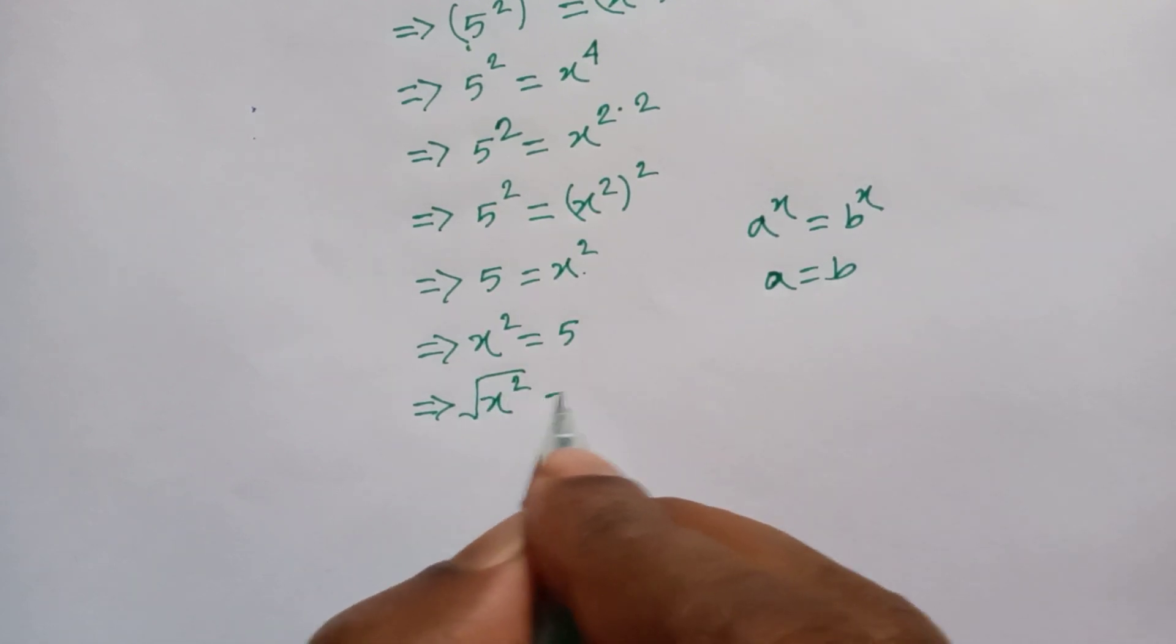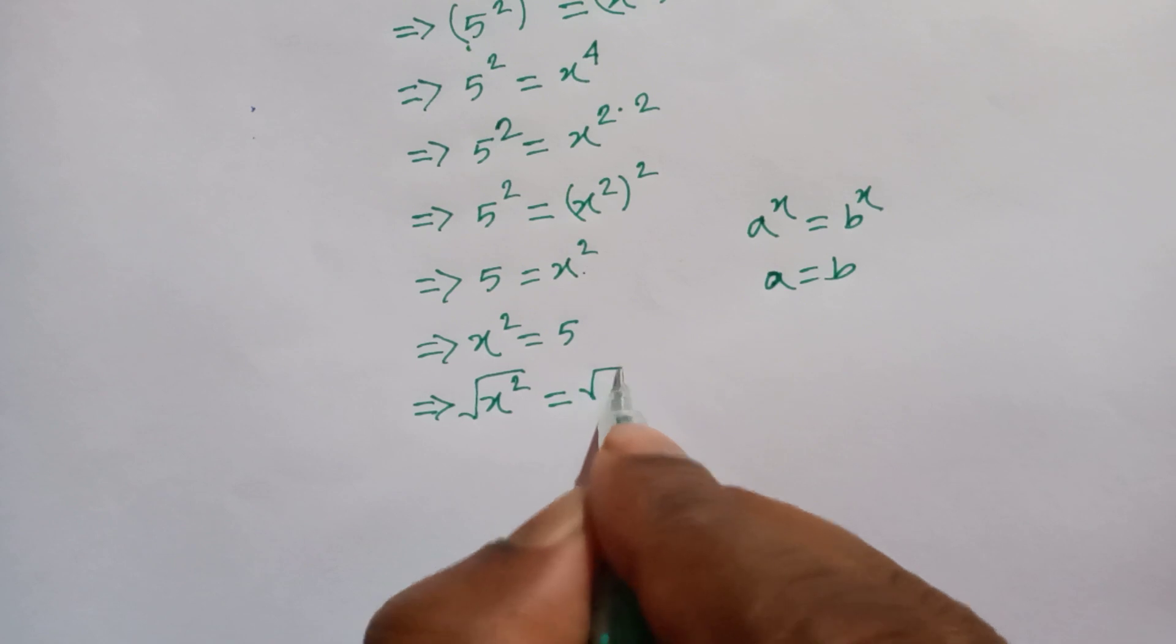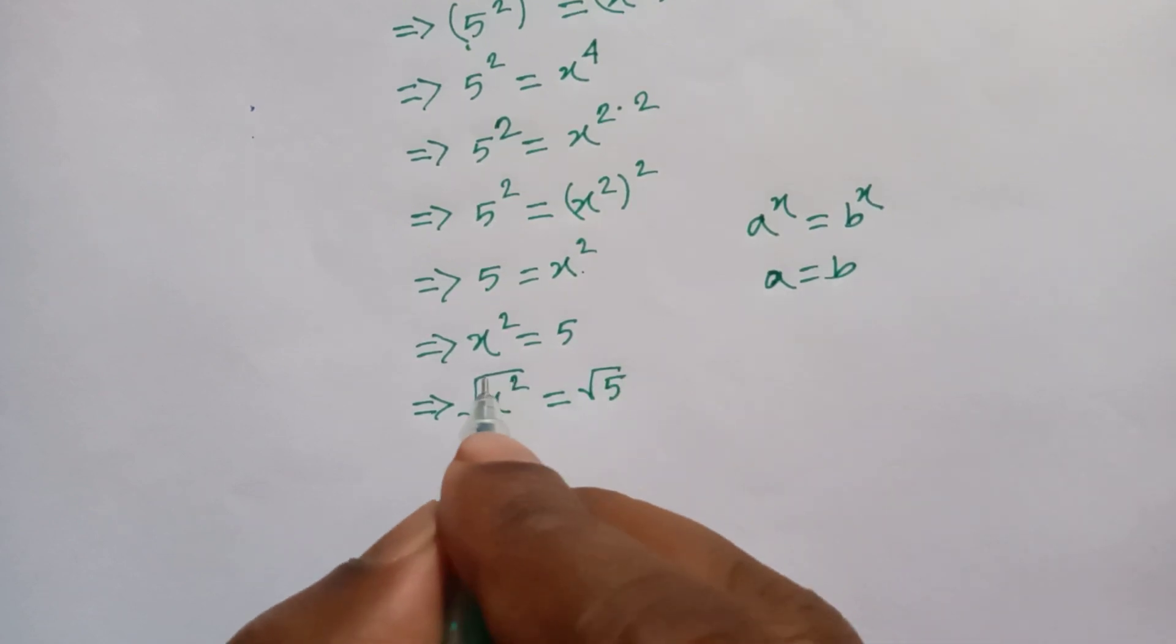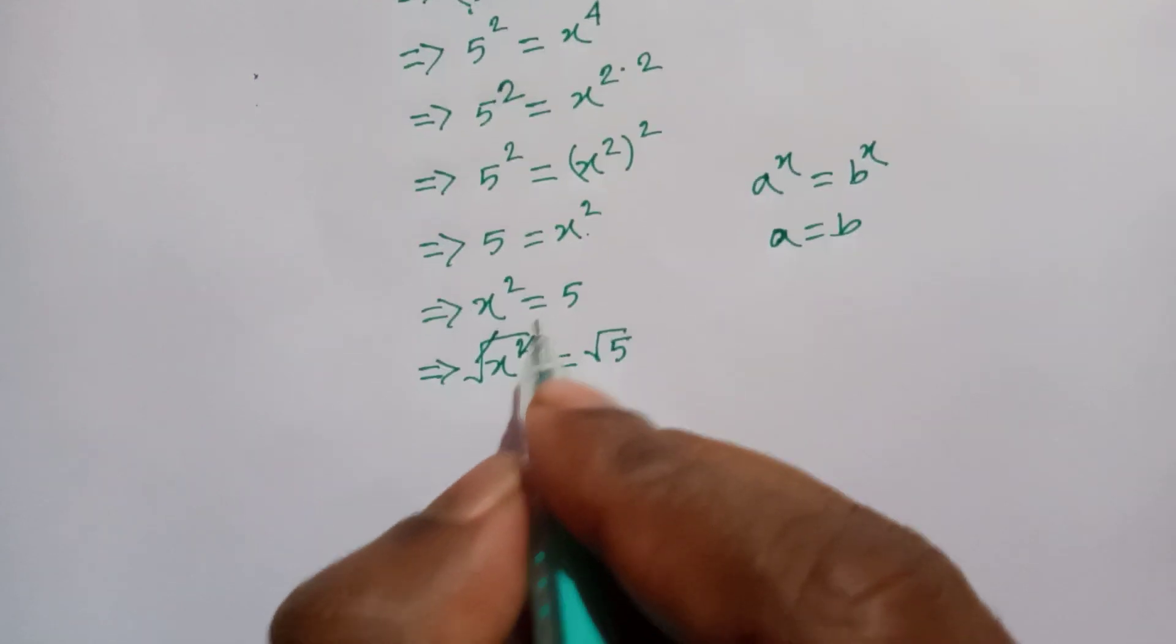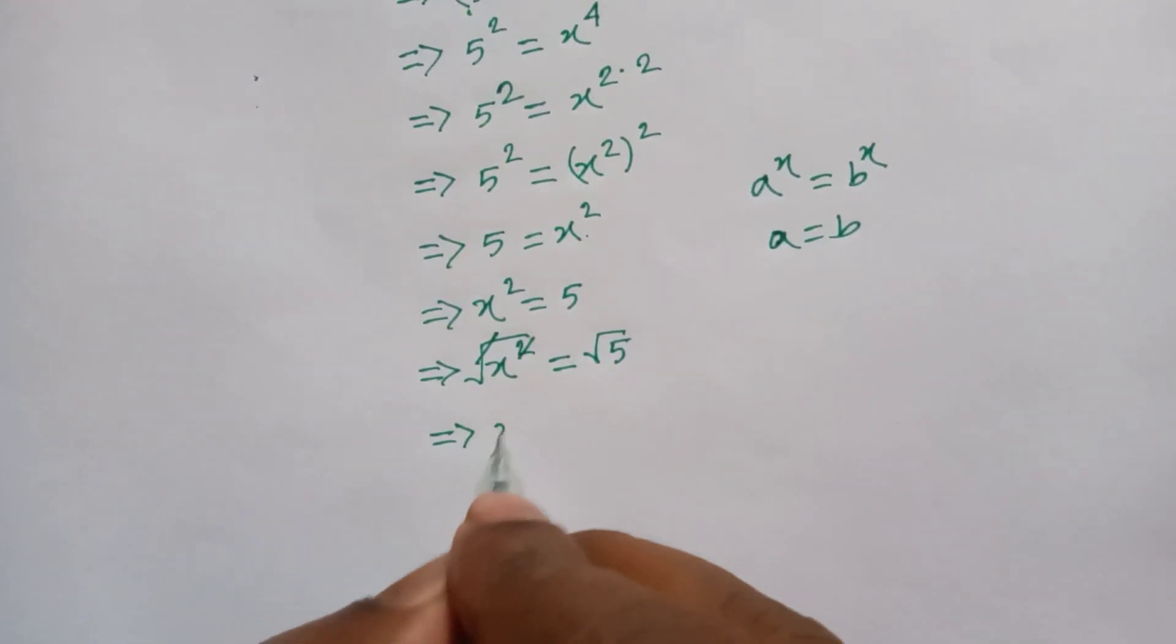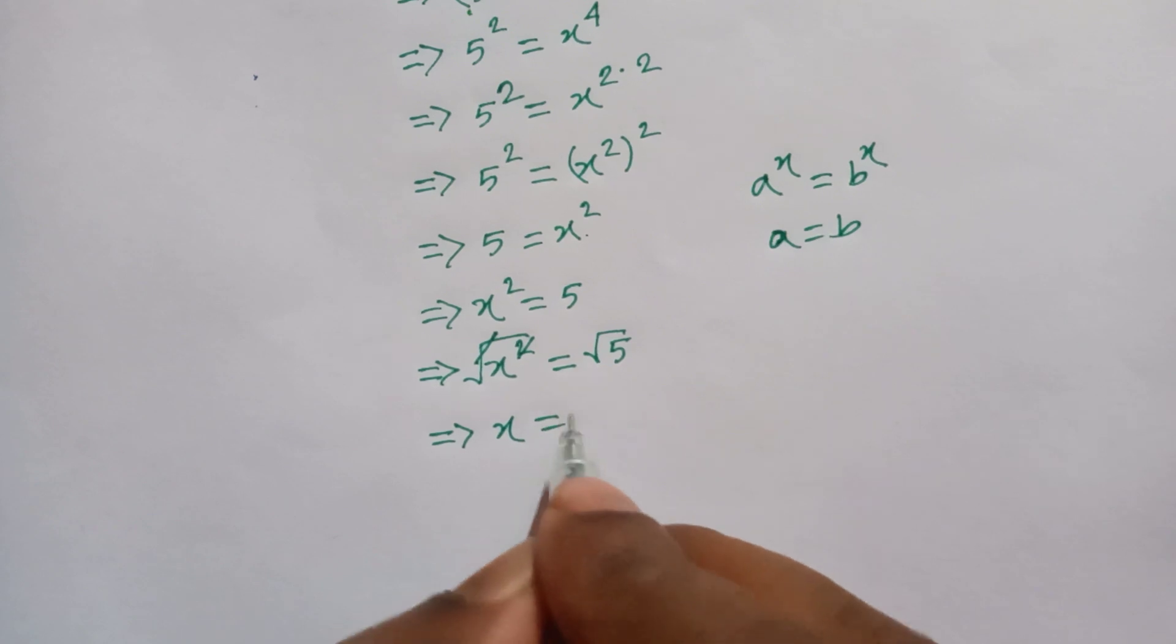Here square root cancels square, or x is equal to root 5. And it is our final answer, the value of x.